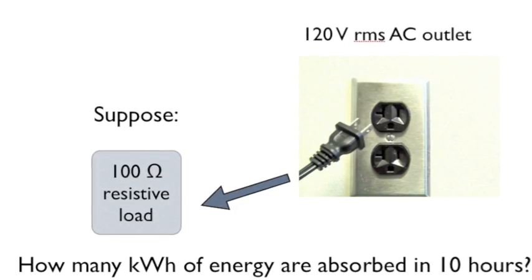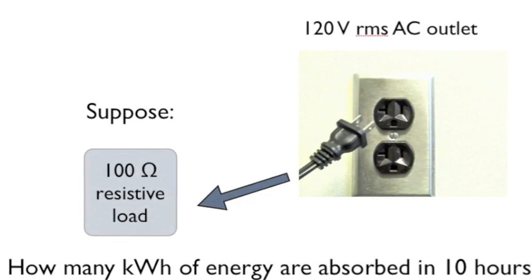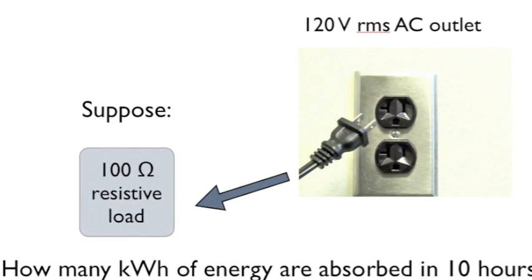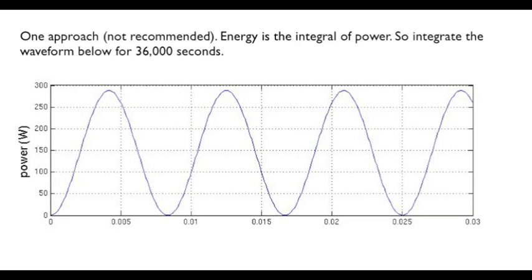Let's consider an example of the value of using rms concepts for power and energy calculations. Say a 100 ohm resistive load is connected to the outlet for 10 hours. How many kilowatt hours of energy are consumed? Earlier in this lesson we determined that such a situation would correspond to a power varying with time at 120 hertz and varying between 0 and approximately 280 watts. Energy we know is the time integral of power. So integrate the waveform for 36,000 seconds.